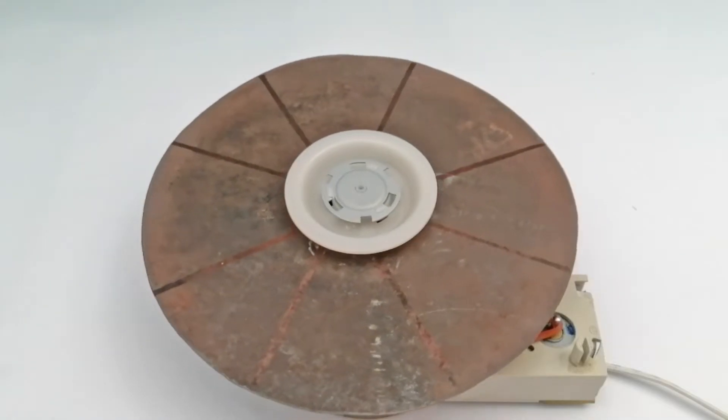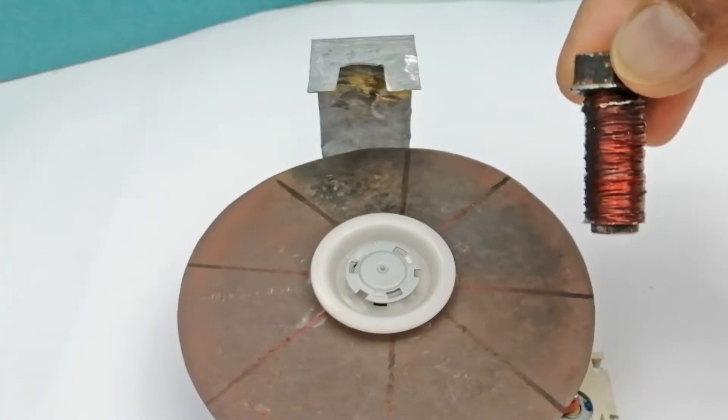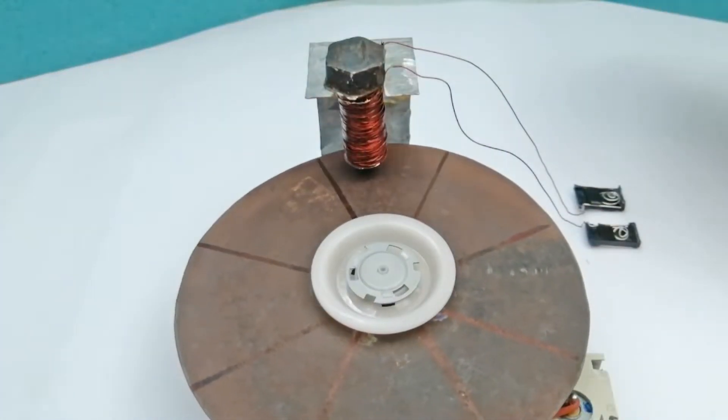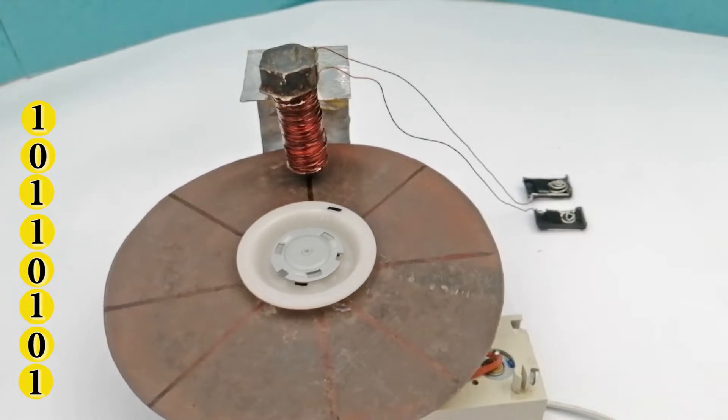We rotate the disk with the help of a motor. Let's put a stand with it. With the help of stand we put a read-write head on it which is a coil. Let's save our data on it. This is our data. Let's save it to disk now.